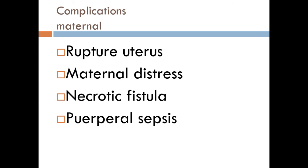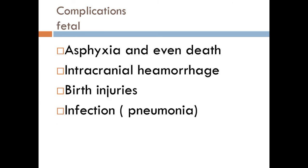Complications of obstructed labor can be maternal or fetal. Maternal complications: if neglected, ruptured uterus can occur easily; also maternal distress, necrotic fistula — especially rectovaginal fistula — due to prolonged compression of the fetal head over the rectal wall, and puerperal sepsis. Fetal complications include asphyxia and even intrauterine fetal death, intracranial hemorrhage due to excessive molding of the fetal skull bones, birth injuries, and fetal infection such as pneumonia.